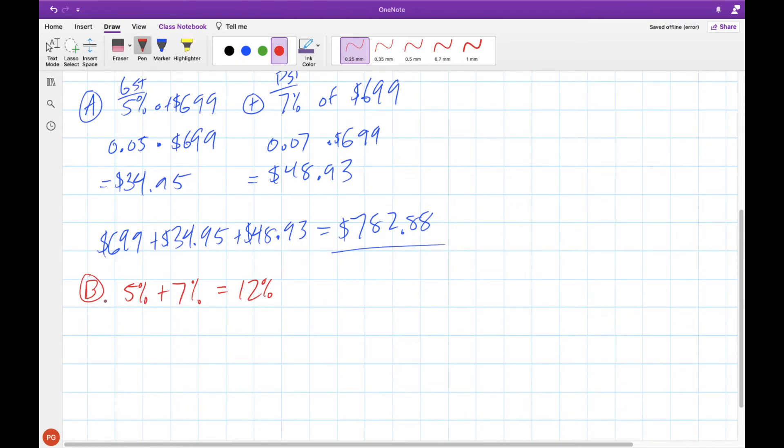For our second method, we can recognize that the 5% and the 7% are both on our sales price, so we can just combine these percentages together. And now we can do 12% of $699, which gives us $83.88. Now we can add this to our original sales price, and get our final answer, which, if you notice, matches our first method.